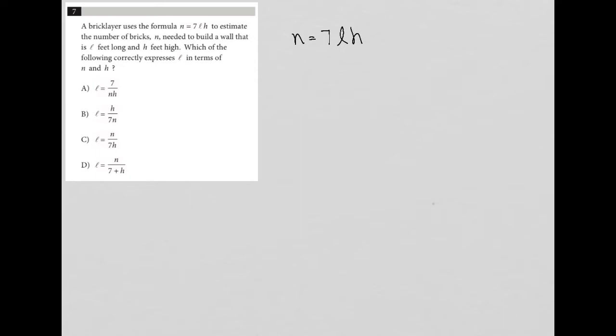This formula N equals 7LH to estimate the number of bricks needed to build a wall that is L feet long, so this L is in feet, and H feet high, so this H is in height. Which of the following correctly expresses L in terms of N and H?